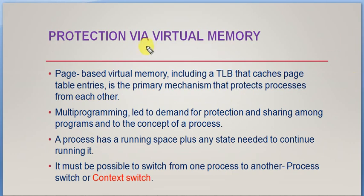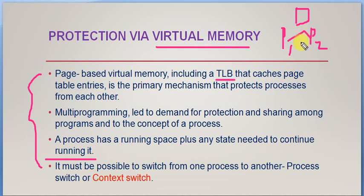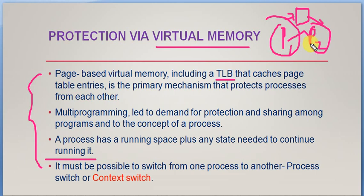How can we add protection using virtual memory? The TLB is the primary mechanism that protects processes from each other. Multiprogramming led to demand for protection and sharing of programs. A process has a running space plus any state needed to continue running. There will be context switching between processes — at a time only one process will be working, then it will switch to the next. Context switching ensures they won't mix each other's memory. Context switching is a mechanism used for providing memory protection with the support of virtual memory.